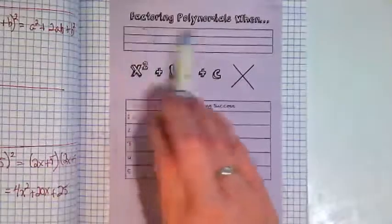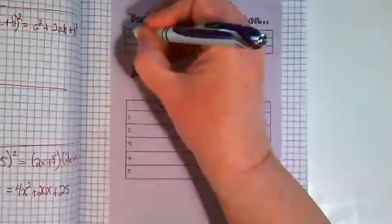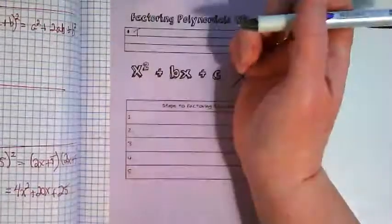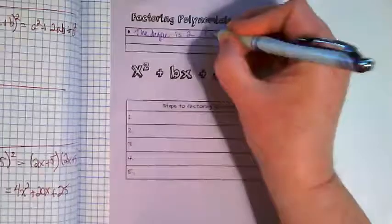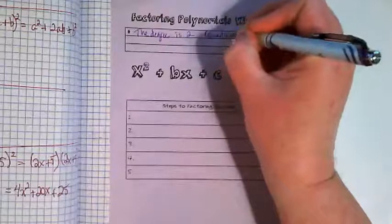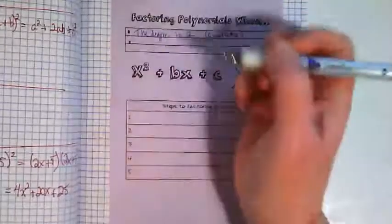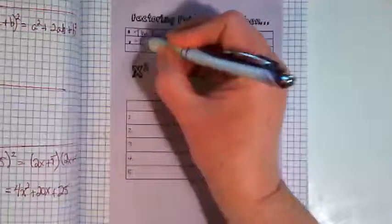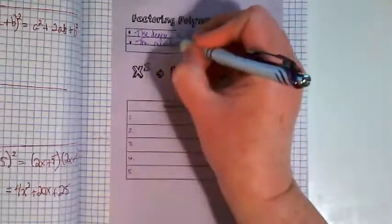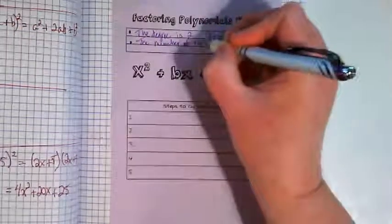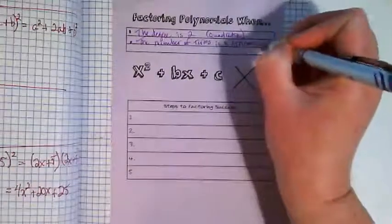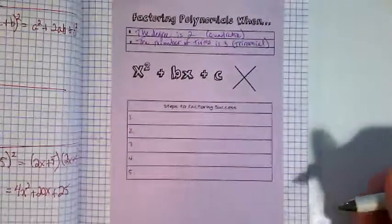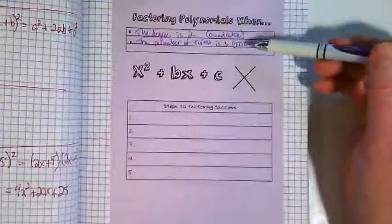So factoring polynomials when there's three criteria here. One, all of what we're going to take notes on here is true when the degree is two, basically when it's a quadratic. When the number of terms is three, so that means it's a trinomial. It seems like it was three years ago, but it was really about three months ago when we were naming polynomials. So we're talking about quadratic trinomials.